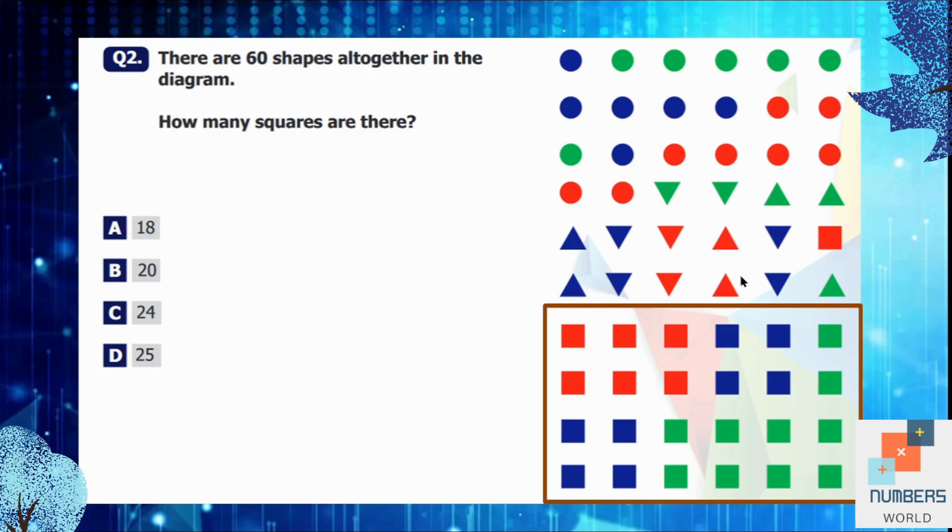But wait, we are going to look around. Is there any other square in the rest of the shapes? So yes, there is one. So previously we had 24 squares. Now we have one more. So 24 plus 1 is equal to 25. So D is our answer.